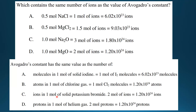Option C: ions in 1 mole of solid potassium bromide. Potassium bromide consists of K+ and Br- ions, so we multiply 1 by 2 to give 2 moles of ions, and multiplying by Avogadro's constant gives 1.20 times 10 to the 24 ions. Option D: protons in 1 mole of helium gas. Helium has atomic number 2, so an atom of helium has 2 protons. We multiply 1 by 2 to give 2 moles of protons, then multiply by Avogadro's constant to give 1.20 times 10 to the 24 protons. So the correct answer is A.